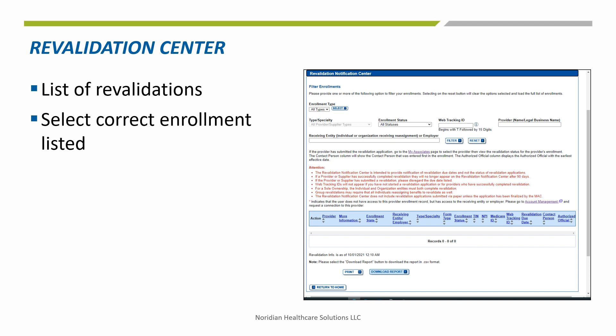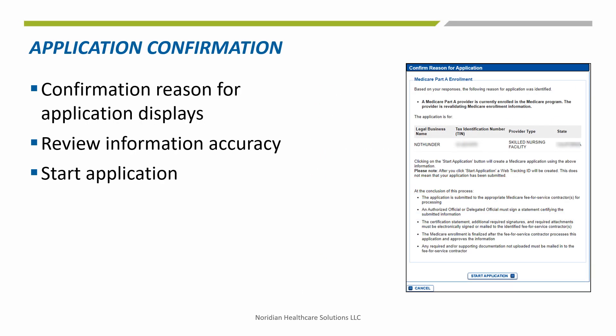When beginning through the Revalidation Notification Center, you will be redirected to this screen. Any enrollment records which need to be revalidated will appear on this screen. There is an option to filter based upon different types of enrollment records, then narrowing down the information even further by adding in a provider's name or organization's name. Once an application questionnaire is completed, a confirmation page will display and the application can be started.